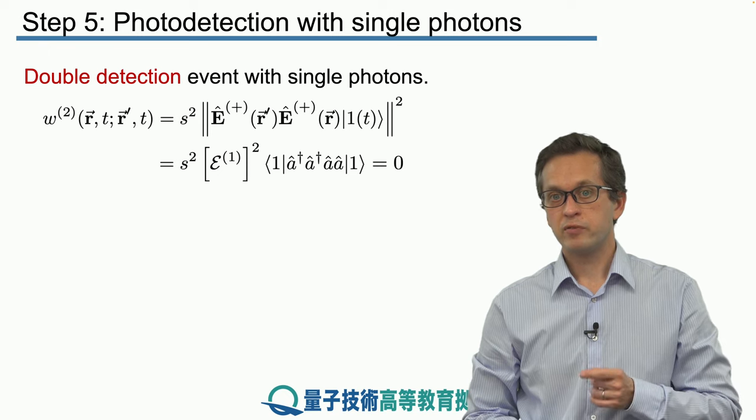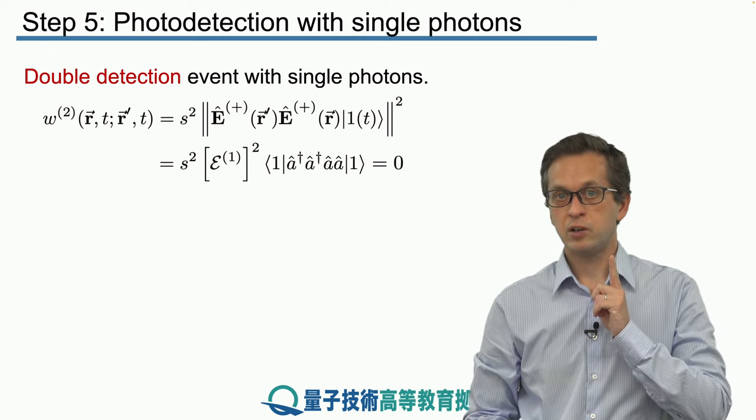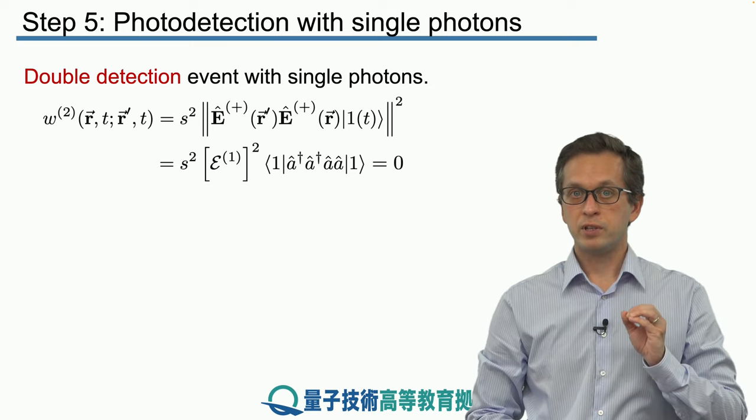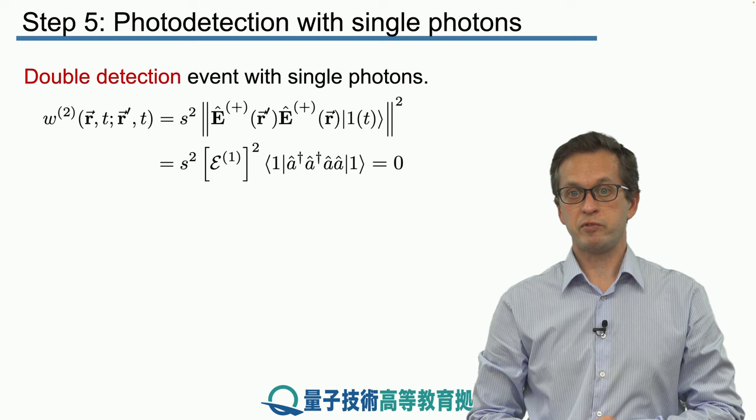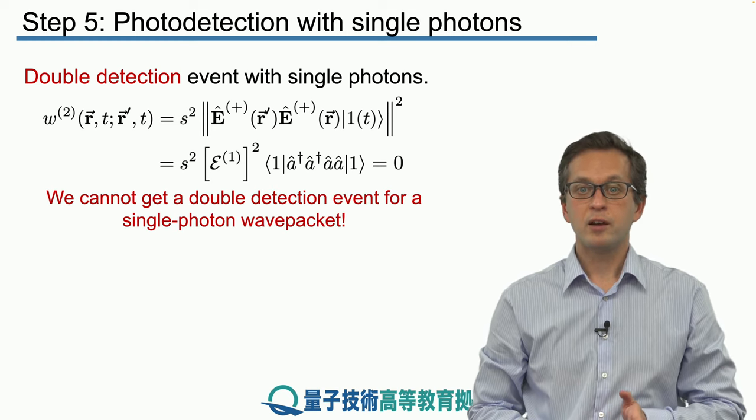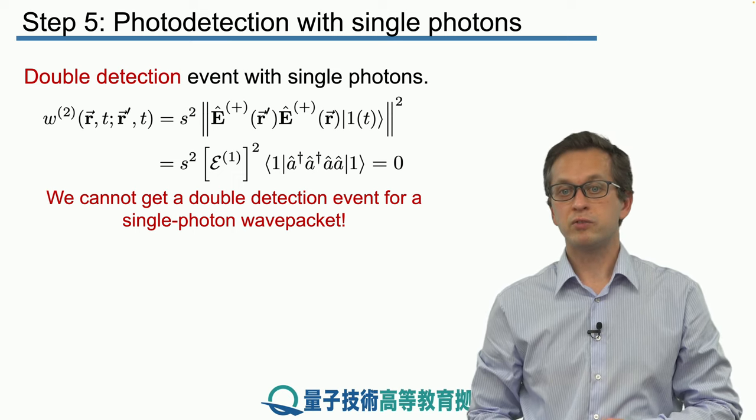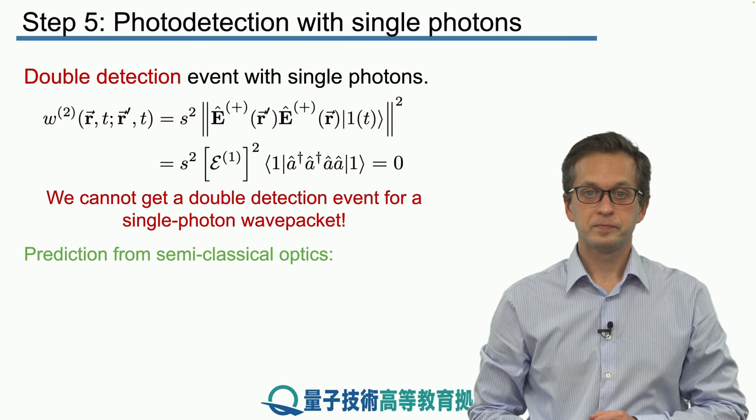After all, this makes sense. We have perfect detectors, and we started with a field that only had a single photon. So if we detect that photon, there is no chance that the other detector also detects the same photon. So quantum mechanically, we cannot get a double detection event for a single photon wave packet.